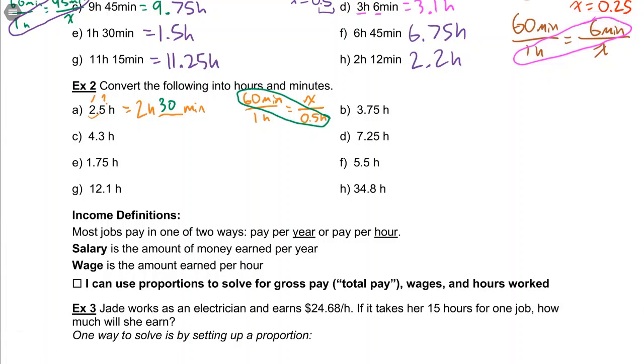Now some of you, by now, have memorized these, and that's fine too. If you have this memorized, and you know 0.75 of an hour, maybe you have your fractions memorized, and you know that 0.75 is 3 quarters, and you know that 3 quarters of an hour is 45 minutes. So maybe you can go right to 3 hours and 45 minutes. If you can, that's great. If you can't, that's okay. Just set up a proportion and solve.